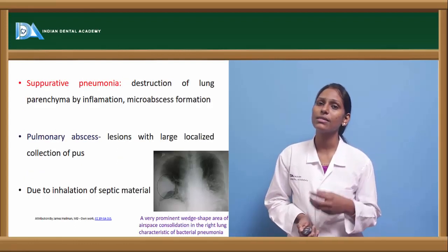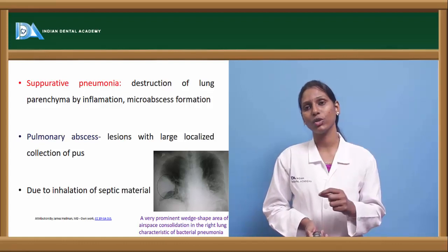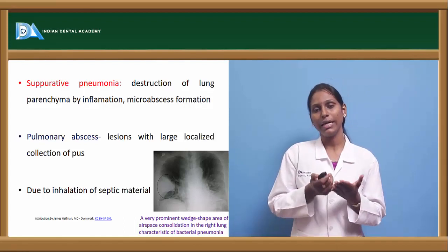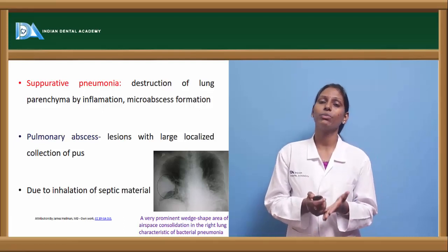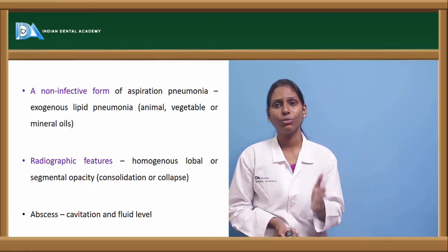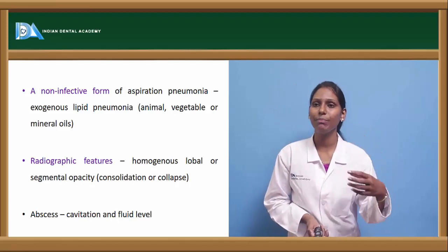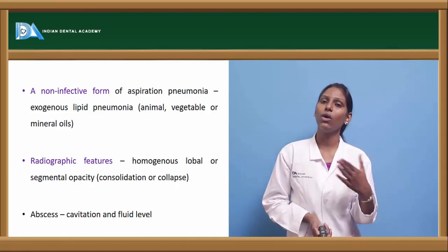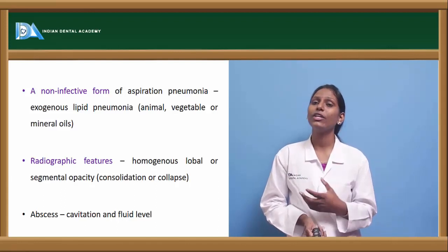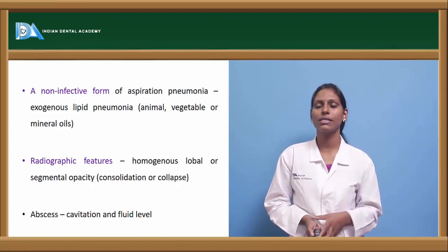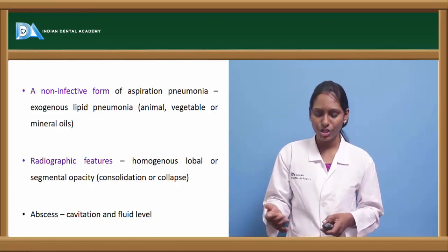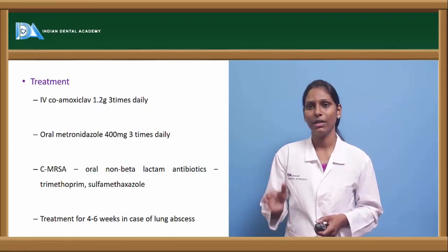Coming to suppurative pneumonia, there is destruction of lung parenchyma by inflammation and micro-abscess formation. This can further lead to pulmonary abscess with large localized collections of pus. It is caused by inhalation of septic material. A non-infective form is aspiration pneumonia due to exogenous lipid pneumonia from animal, vegetable, or mineral oils. Radiographic features include homogenous lobar or segmental opacification; abscesses cause cavitation and fluid level changes can also be seen.